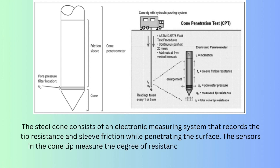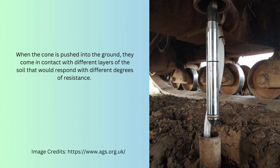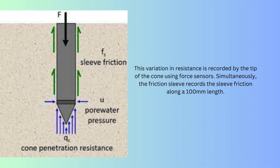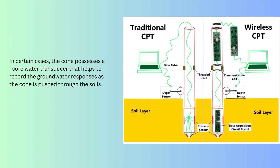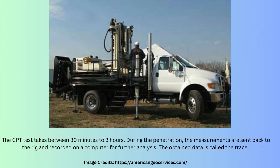When the cone is pushed into the ground, it comes in contact with different layers of soil that respond with different degrees of resistance. This variational resistance is recorded by the tip of the cone using force sensors. Simultaneously, the friction sleeve records the sleeve friction along a 100 mm length. In certain cases, the cone possesses a pore water transducer that helps record groundwater responses as the cone is pushed through the soils. On average, the CPT test takes between 30 minutes to 3 hours for completion. During the penetration, measurements are sent back to the rig and recorded on a computer for further analysis.